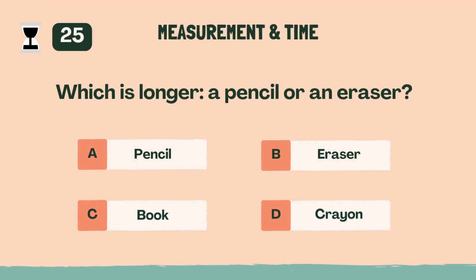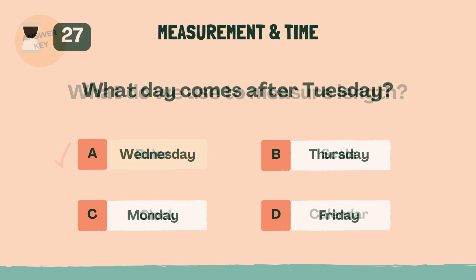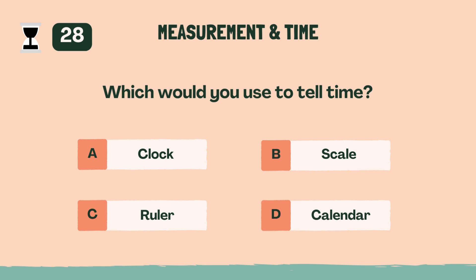Which is longer. A, pencil. What do we use to measure length? A, ruler. What day comes after Tuesday? A, Wednesday. Which would you use to tell time? A, clock. Awesome.